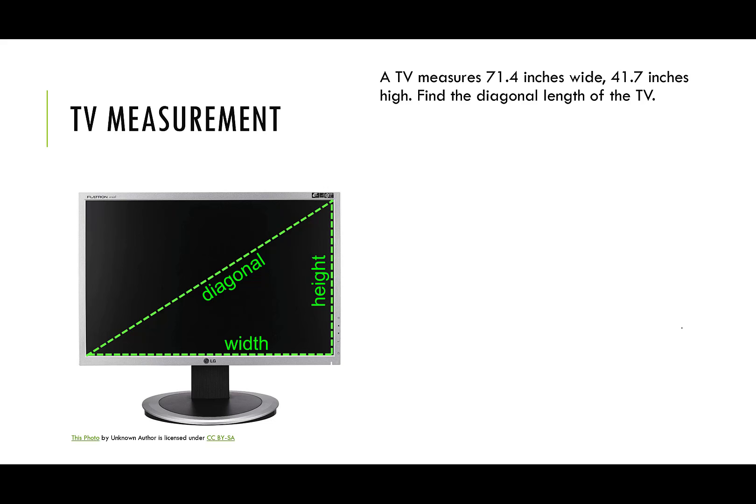So we'll start with, it says it's wide 71.4. So 71.4. We're going to square it. And 41.7 inches high. So we write 41.7 and we square it. And that'll give us this diagonal that we don't know squared. Again, let's do this all at once. So I'm putting in 71.4 squared plus 41.7 squared. I'll tell you, it gives me 6,836.85.